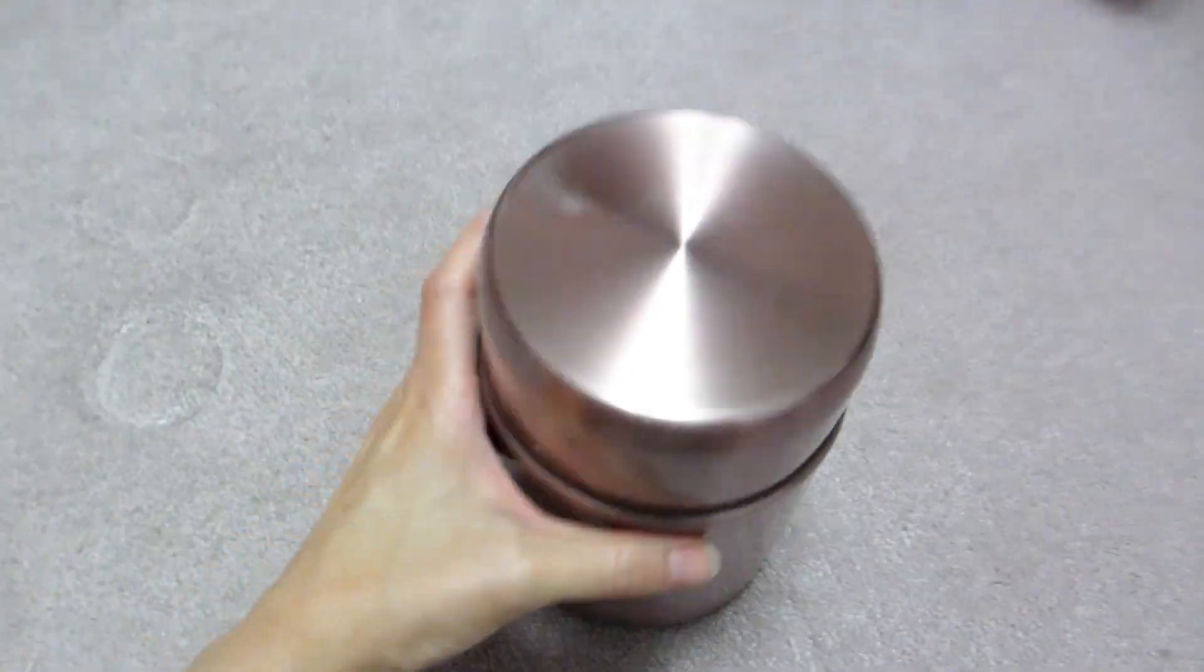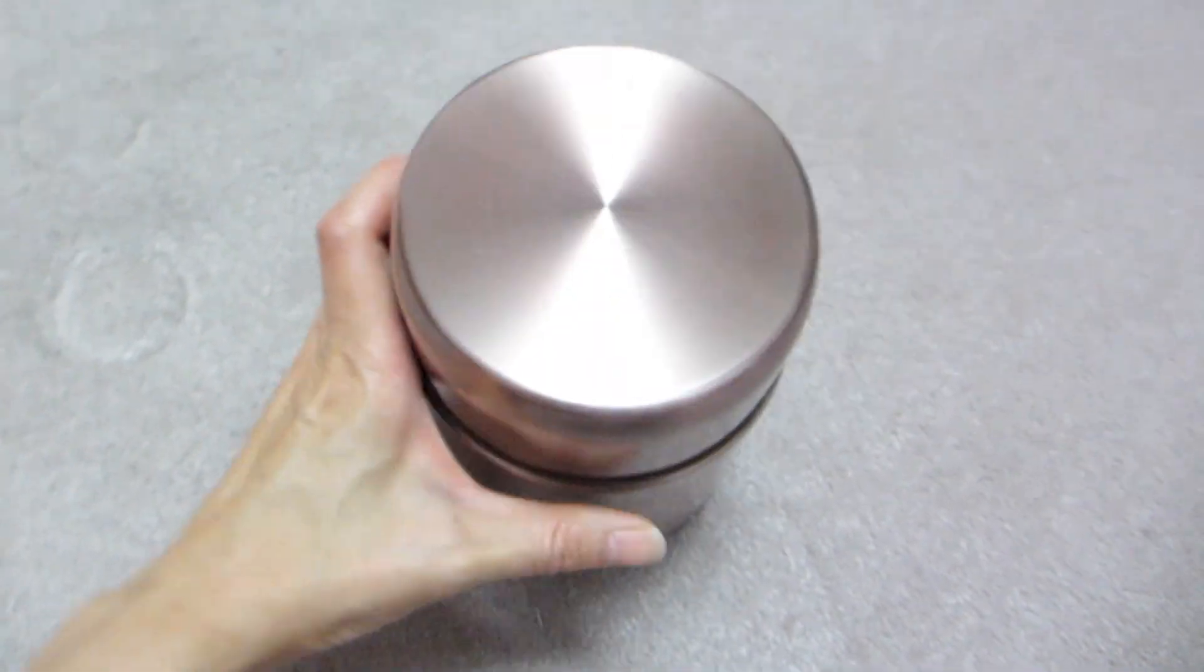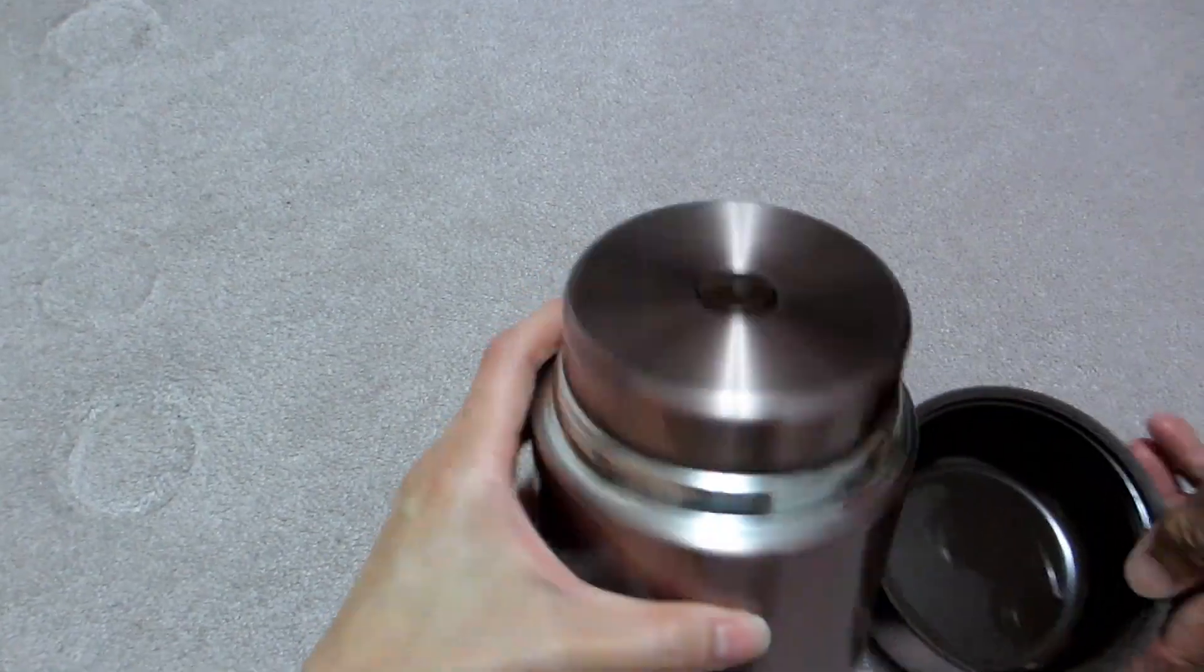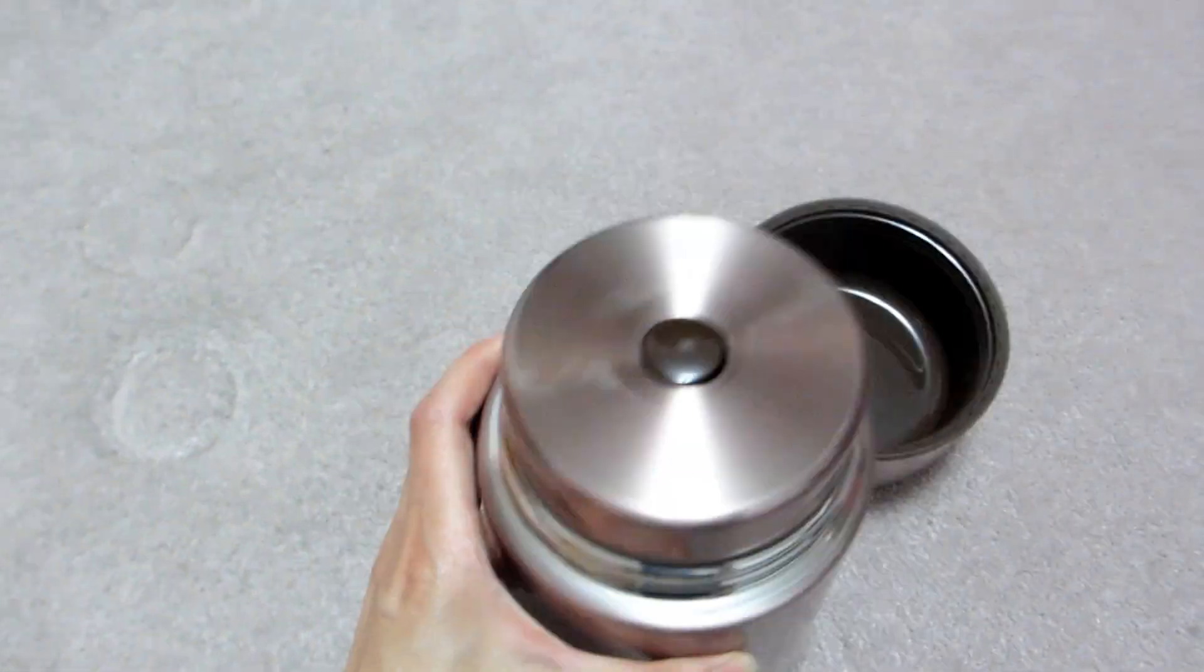So first thing to note is this flask is made of stainless steel so you know it's good quality and will last. And let's go ahead and twist the lid off and then of course there's a second lid as well.